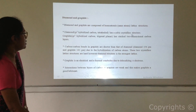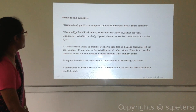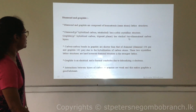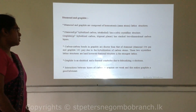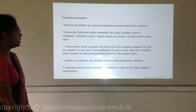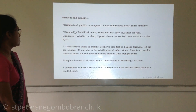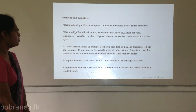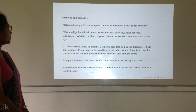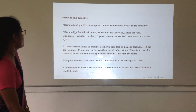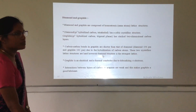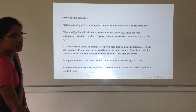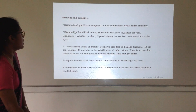Diamond consists of a crystalline structure, while graphite consists of two-dimensional carbon layers. The carbon-carbon bonds in graphite are shorter than those in diamond, due to the hybridization of the carbon atoms. However, the hardest structure is diamond, because its lattice is stronger than the graphite structure.